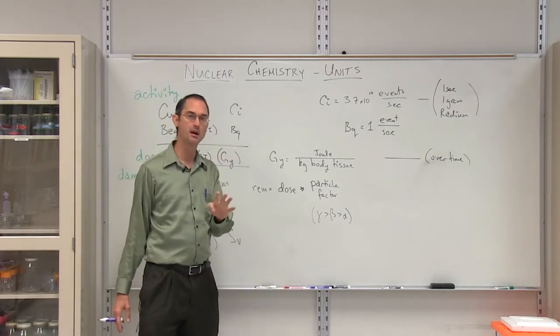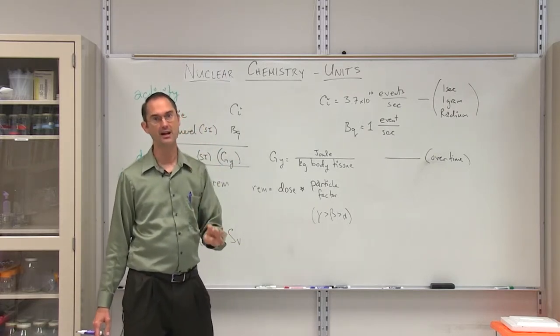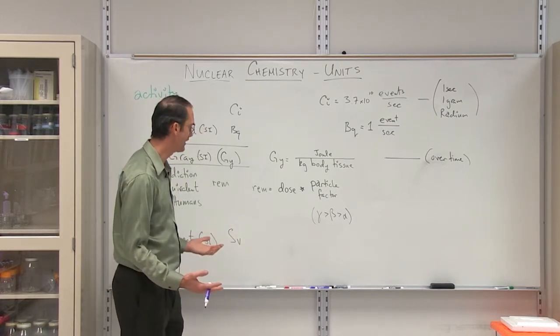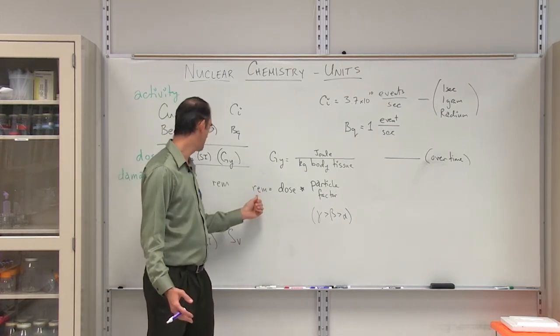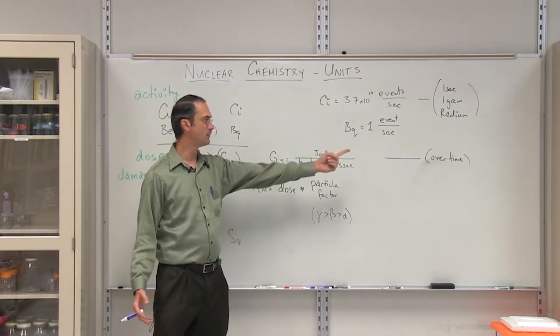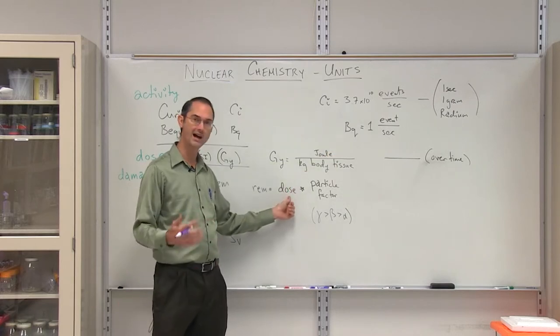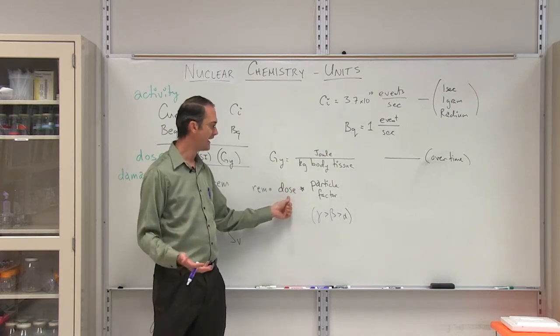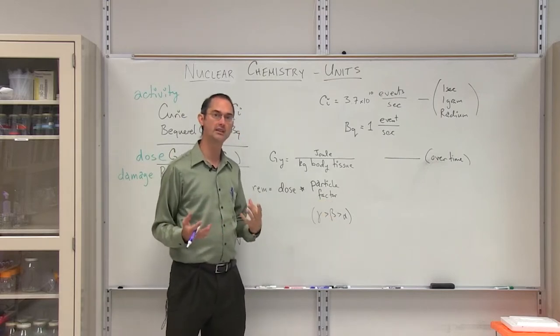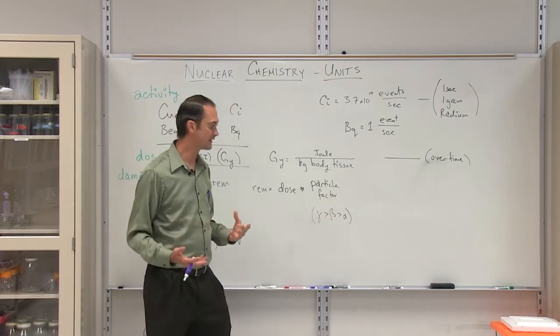The particle factor has to do with what type of radiation we're dealing with. As was mentioned in the previous lecture, we have four types of radiation primarily: alpha, beta, gamma, and also positron. Positron is really rather rare when it comes to health effects. So what I've written down here is that the damage in REMS is equal to the dose, which is given by the GRAYs. Again, which is an over time effect: one hour, two hour, ten hours. This will be an increasing factor, times the particle factor, which just depends upon what type of radiation is being discussed.